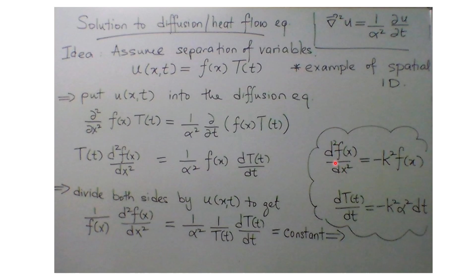This gives two equations: one for the spatial part (1D case), and one for the time-dependent part, also set equal to negative K squared. We now just need to find the solution for these two equations, and those solutions are fed back into the general expression to obtain U.